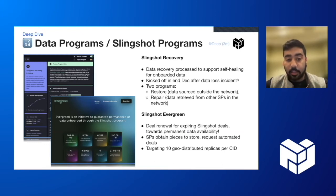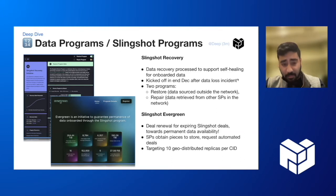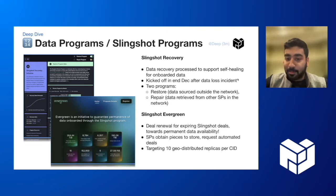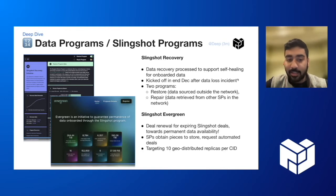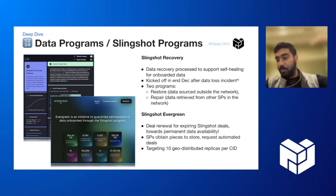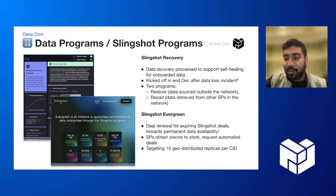At the end of March, we launched a program called Slingshot Evergreen, an initiative to guarantee the permanence of the data that's been onboarded to the Slingshot program. Slingshot has been around for about 18 months — that is also the deal term for many of the deals that started happening at Mainnet. We kicked this off just in time to ensure that data that was onboarded isn't going to be lost from the Filecoin network. The idea is to ensure at least 10 replicas that are very thoroughly geo-distributed are available for the next several years of this data, and ideally forever.